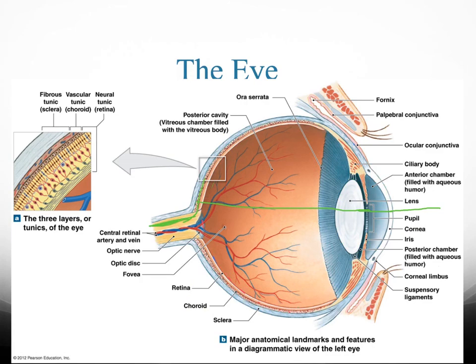From the optic nerve, the signal goes all the way to your occipital lobe, where your visual cortex is — all the way to the back of the brain, where the information is going to be processed.